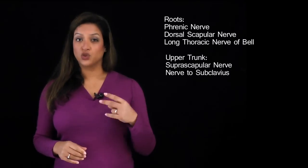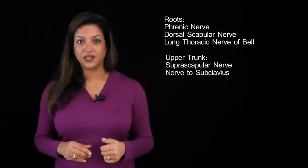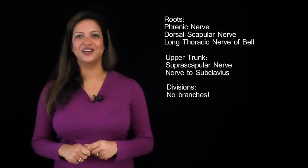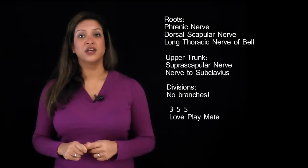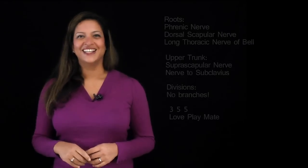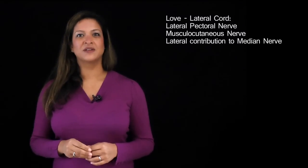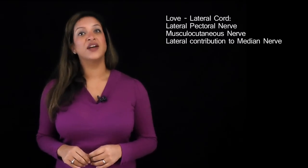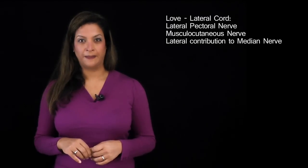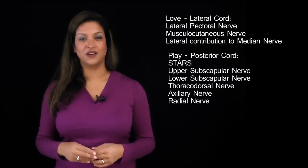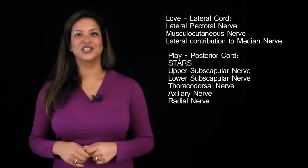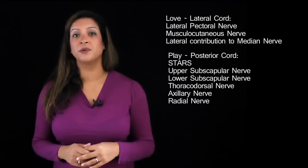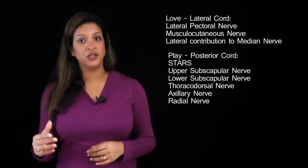The trunks have two branches from the upper trunk: the suprascapular nerve and the nerve to subclavius. The divisions, thank goodness, have no branches. Then we have 3-5-5 from the mnemonic 'Love Playmate.' Lateral has three branches: the lateral pectoral nerve, the musculocutaneous nerve, and the lateral contribution to the median nerve. Posterior (P for Play) has five branches remembered by STARS: the upper and lower subscapular nerves, the thoracodorsal nerve, the axillary nerve, and the radial nerve.